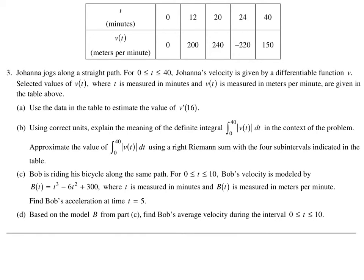Alright, for this question you are not allowed a calculator. Your information is given as a table. Hopefully from this table you notice it's a velocity and that is your units. That is your time. Let's read the question. Joanna jogs along a straight path from 0 to 40 time frame which looks like minutes. Joanna's velocity is given by a differentiable function v, which is right here, which is in a table.